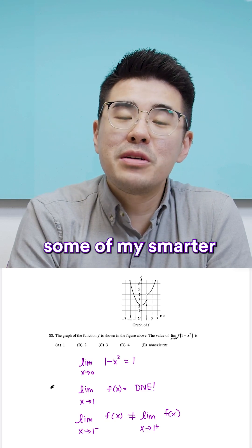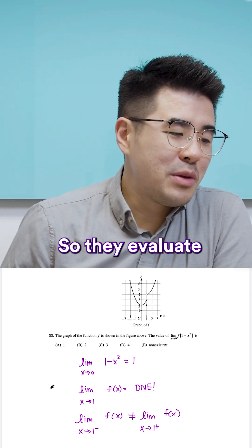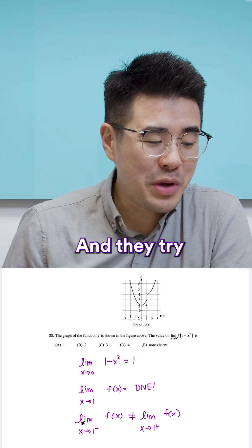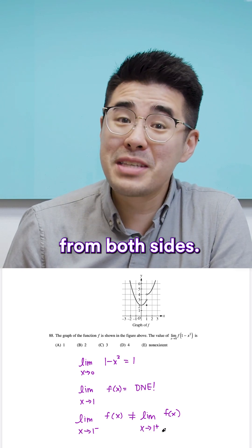So let's move on to what some of my smarter students do. So they evaluate the limit and they still get the limit as 1. But then they use the true definition of limit and they try to figure out the limit from both sides.